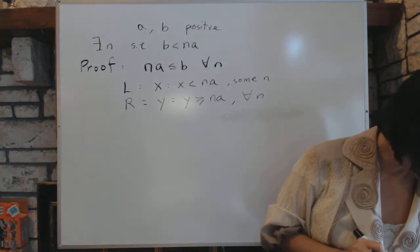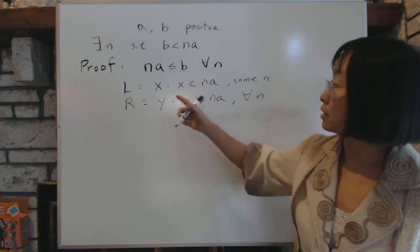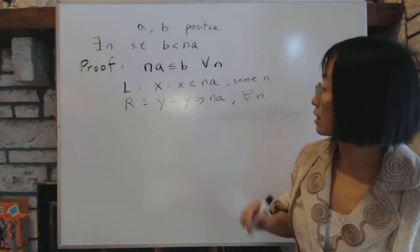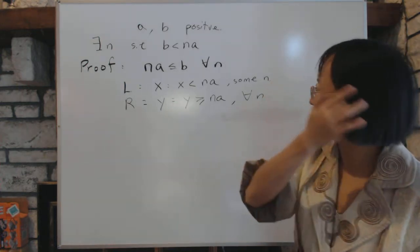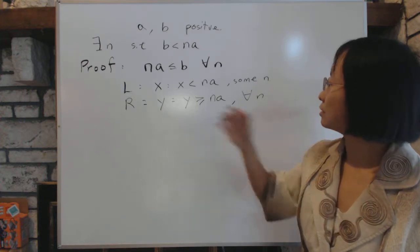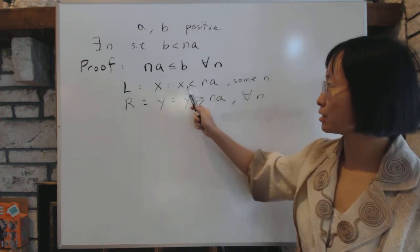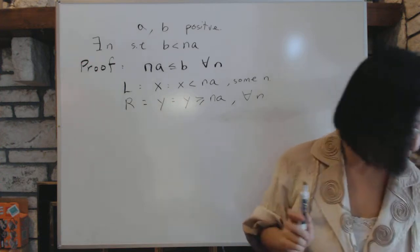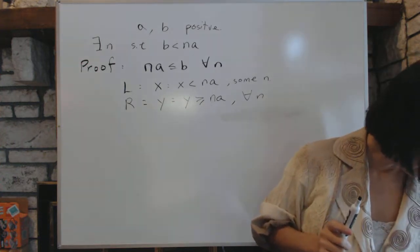Now we know that every number is either in L or in R, because that's how we define it. Every number has to be either less than or bigger than or equal to. There's no other kind.